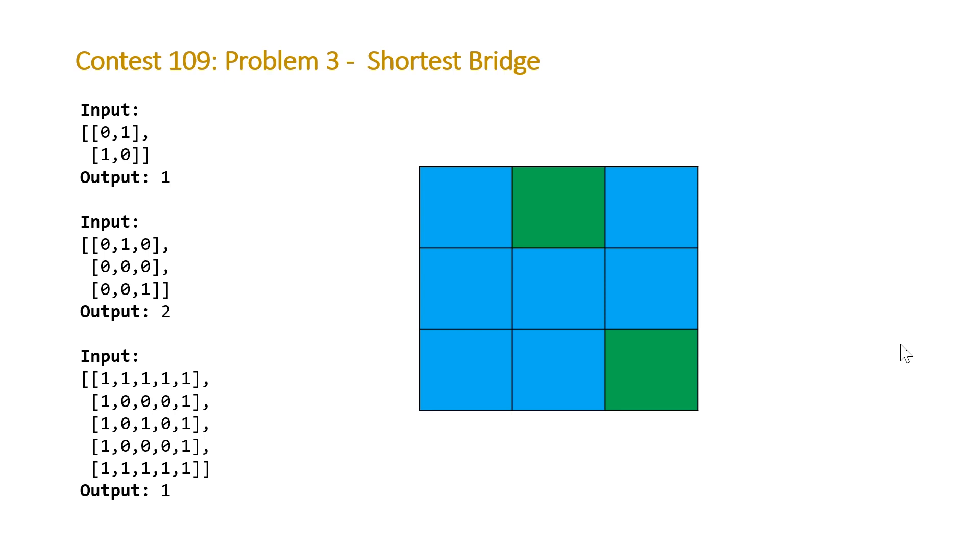If we take a look at our second example, here are our two islands and it's clear that you only need to fill in two squares here. Either these two, these two, or these two to connect them. So that's why we have our output equal to 2.